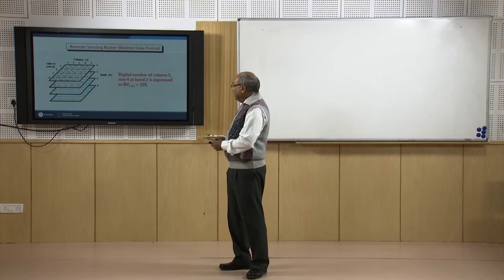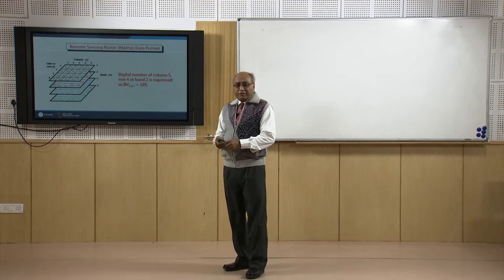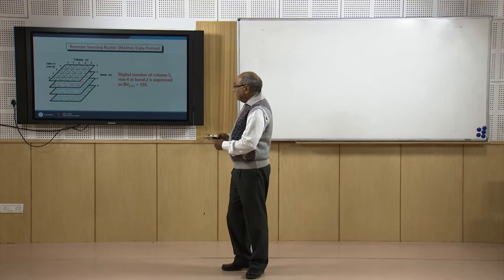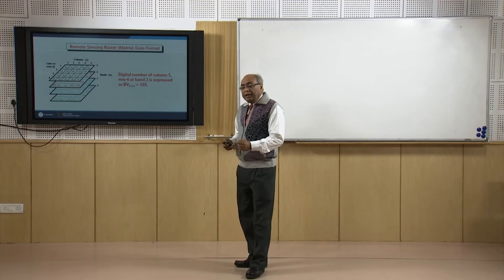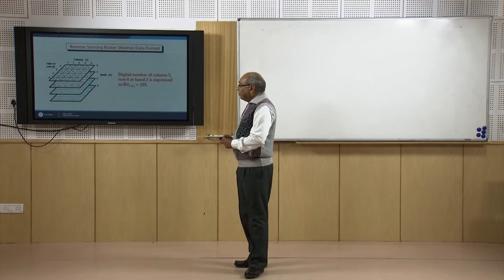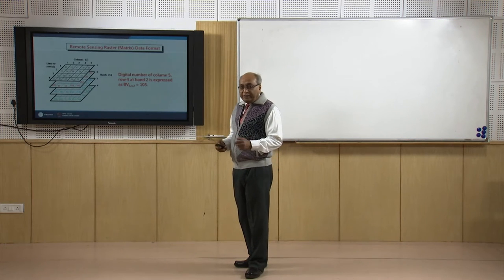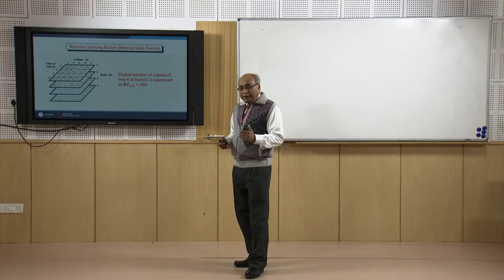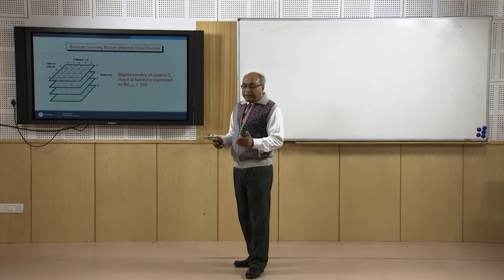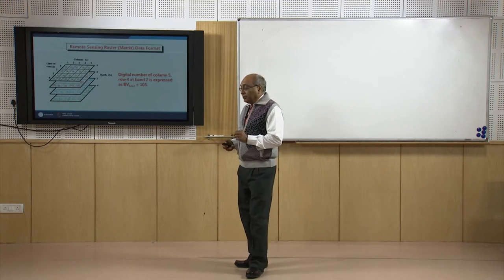Remote sensing images are nothing but a two-dimensional matrix — a raster data. Each cell has a pixel value expressed as positive integer values. The shape of a cell, which we call a pixel, is square. However, the overall shape of the image or two-dimensional matrix can be either square or rectangular — meaning the number of rows and columns need not be the same, but the pixel shape has to be square.